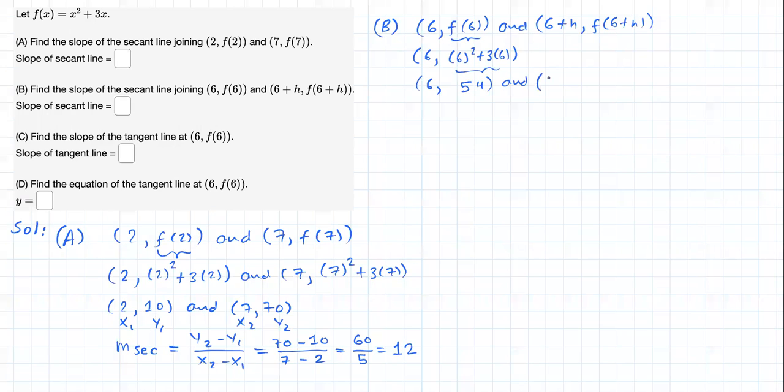And this guy, 6+h input value, output value (6+h)² + 3(6+h). Let's do the math now for the second point. We should get this: (6+h)² is just (6+h)(6+h), plus 3×6 = 18, 3×h = 3h.